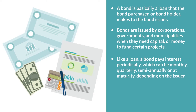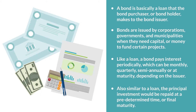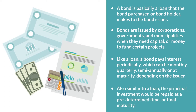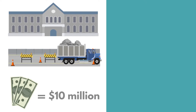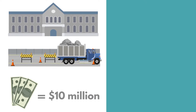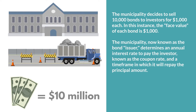Like a loan, a bond pays interest periodically, which can be monthly, quarterly, semi-annually, or at maturity depending on the issuer. Also similar to a loan, the principal investment would be repaid at a predetermined time or final maturity. For example, suppose a municipality wants to build a new road for $10 million and decides to issue a bond to help pay for the road. The municipality decides to sell 10,000 bonds to investors for $1,000 each. In this instance, the face value of each bond is $1,000. The municipality, known as the bond issuer, determines an annual interest rate to pay the investor, known as the coupon rate, and a timeframe in which it will repay the principal amount.